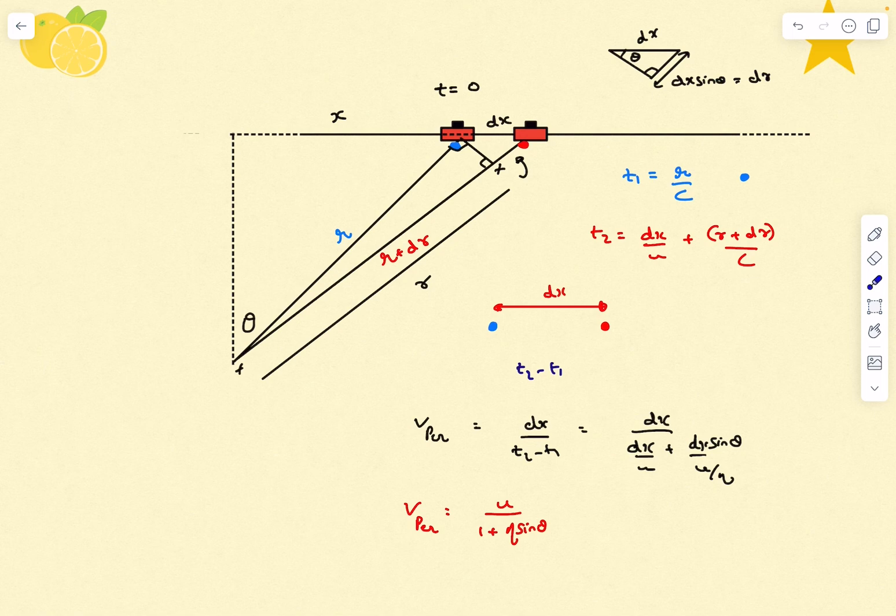From this expression, if η was very small—that is, if the UFO was traveling at a speed much less than c—this would essentially be just u. But if we do not neglect that value, then the guy perceives the velocity of the UFO to be less than its real velocity.